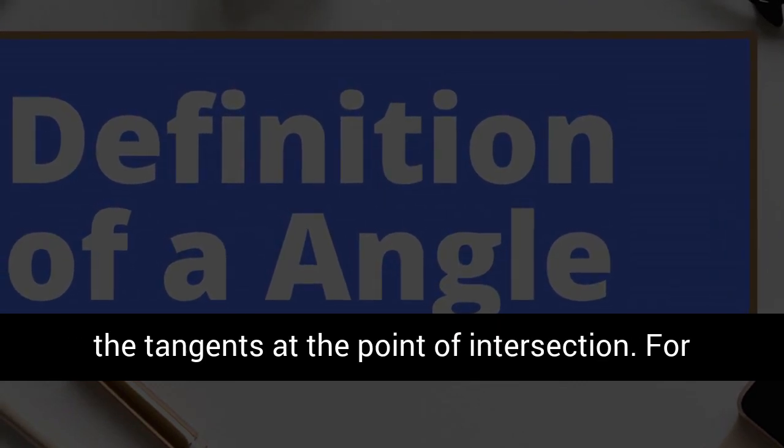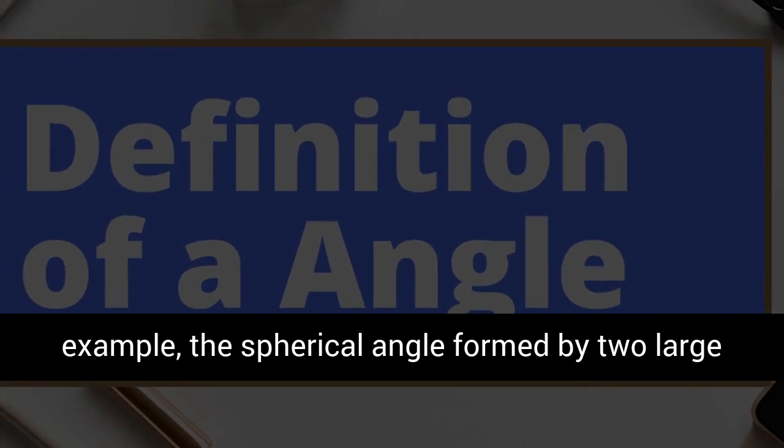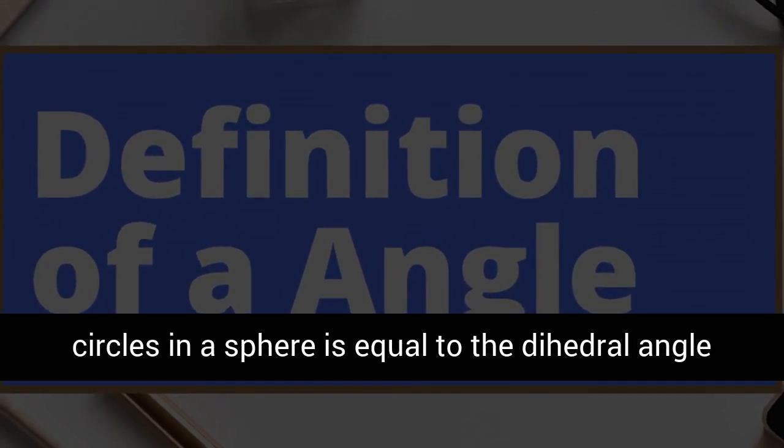For example, the spherical angle formed by two great circles in a sphere is equal to the dihedral angle between the planes containing the great circles.